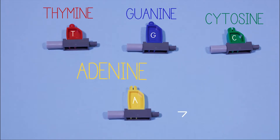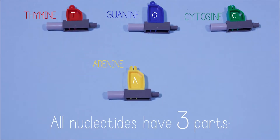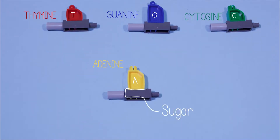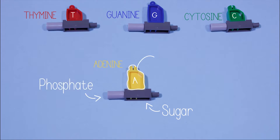All nucleotides have three parts: the sugar, the phosphate, and the base.